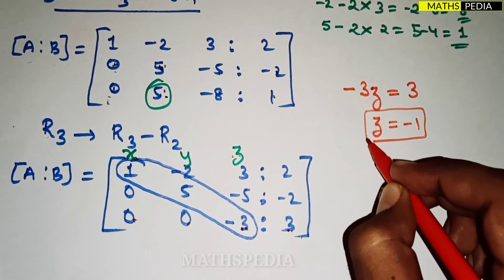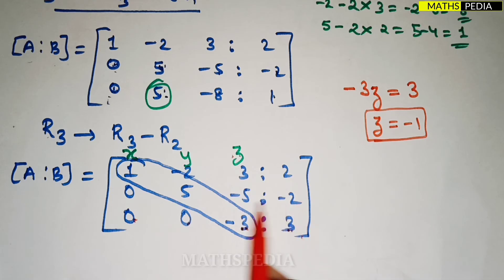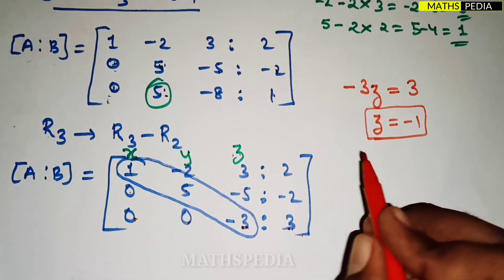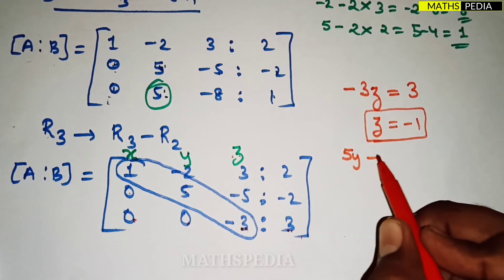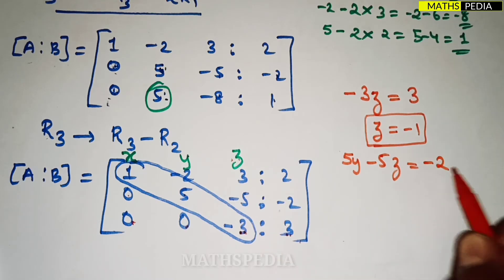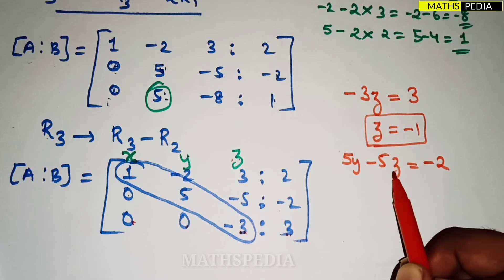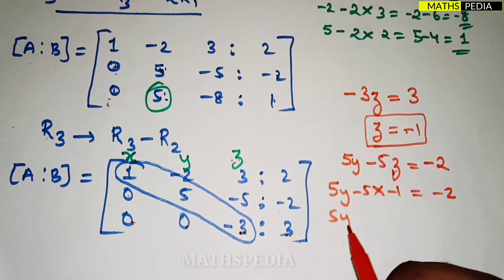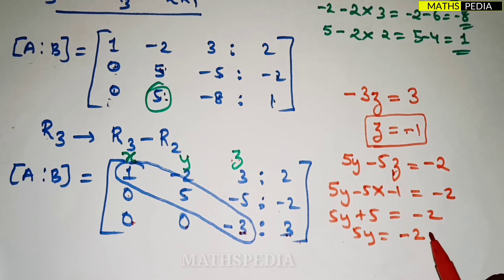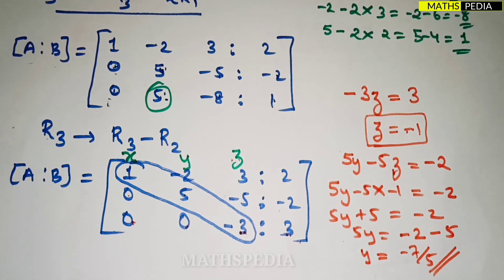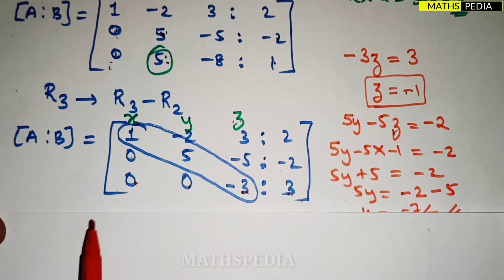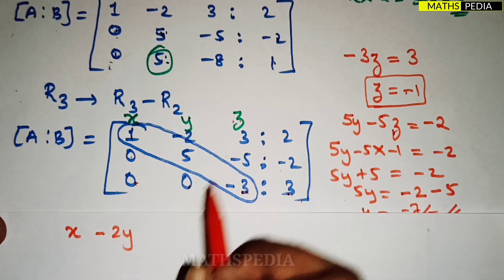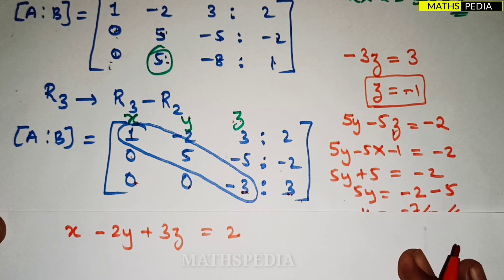From the second row (0, 5, minus 5 | minus 2), the equation is: 5y − 5z = minus 2. Substituting z = minus 1: 5y − 5×(minus 1) = minus 2, so 5y + 5 = minus 2, giving 5y = minus 7, therefore y = minus 7 by 5. Now using the first row (1, minus 2, 3 | 2): x − 2y + 3z = 2.